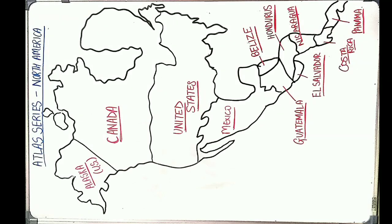Hello everyone, welcome to our atlas series. Today we are going to discuss the North America map. First of all, we can see Alaska — it is a country that belongs to the USA, so a question might be arising as to why it belongs to the USA and not Canada.